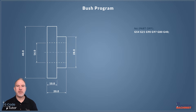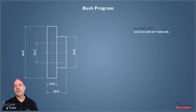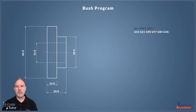G54 is our work shift datum and we've set this zero to the front face of our part. You may have set it to where your parting off blade goes, but in this case we've set it to the front face, so all Z movements will be minus if we are cutting into material. G21 sets our metric measuring system, and G90 is our absolute coordinate system.